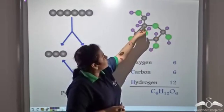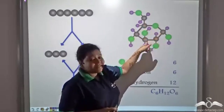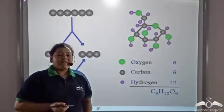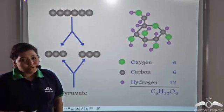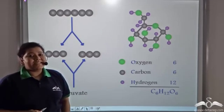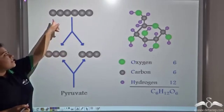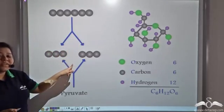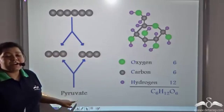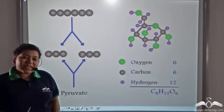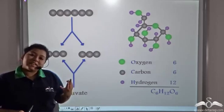These black bead-like structures that you can see are the carbon atoms. So there are 1, 2, 3, 4, 5, 6 carbon atoms. Now, during glycolysis, when glucose is broken down into pyruvic acid, see, the 6-carbon glucose is broken down into 2 molecules of 3-carbon pyruvate. So pyruvate is a 3-carbon compound.